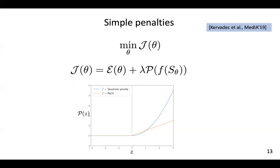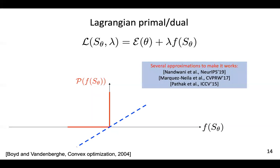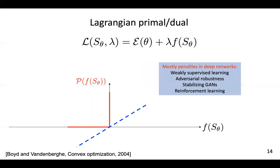One way to solve this is to put the constraints into penalties — basically penalizing violations of these constraints. This is perhaps the most basic way of dealing with constraints, but then the problem is how to fix the weight of this penalty. The best way in standard convex optimization is to use Lagrangian optimization, but this unfortunately does not materialize well in the context of deep networks. There are several recent works, including from our team, that try to solve constrained CNNs and approximate Lagrangian optimization, but mostly people use penalties for dealing with CNNs.